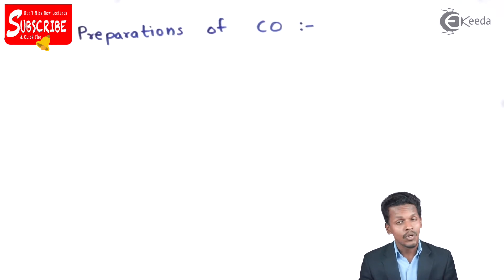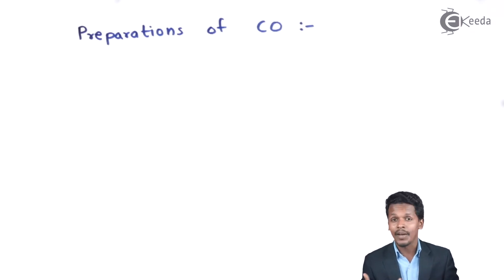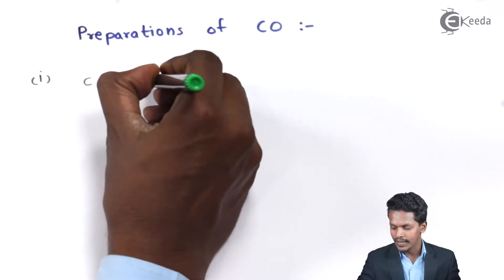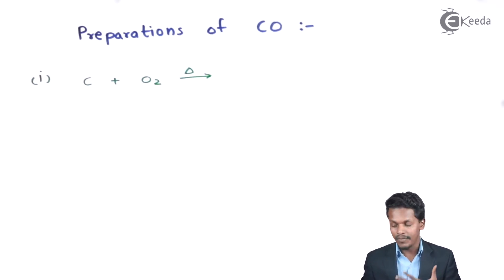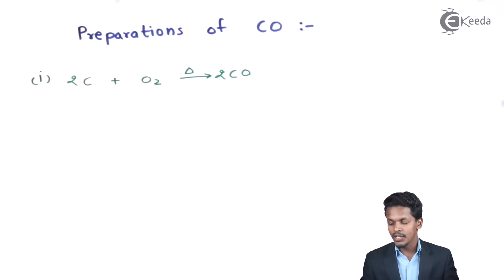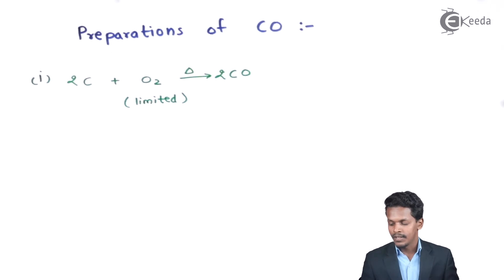As we discussed earlier during the chemical properties of carbon, we talked about reactions where both carbon monoxide and carbon dioxide are produced when carbon undergoes oxidation with O₂. If carbon reacts with oxygen, carbon dioxide is formed as a stable molecule. But if we supply a limited quantity of oxygen, we get two moles of carbon monoxide. This is the reaction where oxygen reacts with coke to give carbon monoxide.